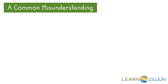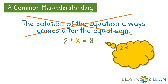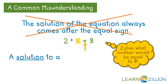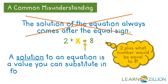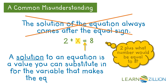Instead, what we should think about is this question: 2 plus what number would be equal to 8? We have to remember the equal sign and what it means — the left side has to have the same value as the right side. A solution to an equation is a value you can substitute in for the variable that makes the equation true. The only value that would work here would be 6. 2 plus 6 equals 8.